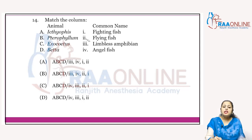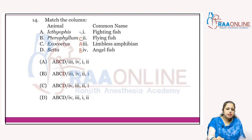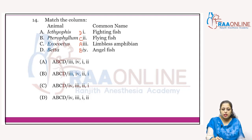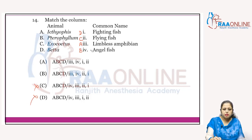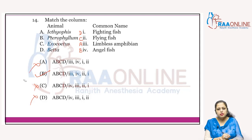Ichthyophis is the limbless amphibian — A3. Pterophyllum is the angel fish — B4. Exocoetus is the flying fish. Beta is the fighting fish — that's why in home fish aquariums we don't prefer Beta because it attacks and kills other fish. A3 is in A and B, so C and D cancel. B4 is present in both. C2 — answer is B.